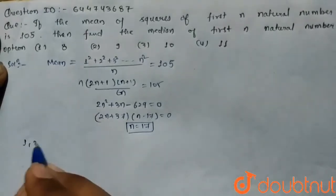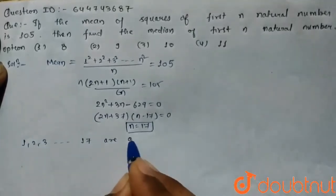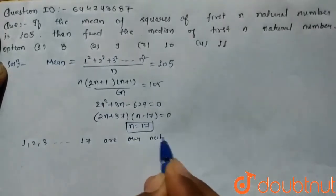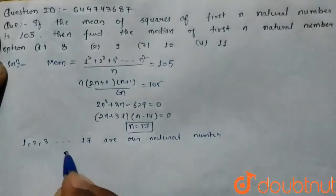1, 2, 3, up to 17 are our natural numbers here. Number of terms...